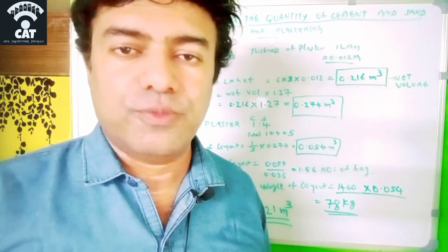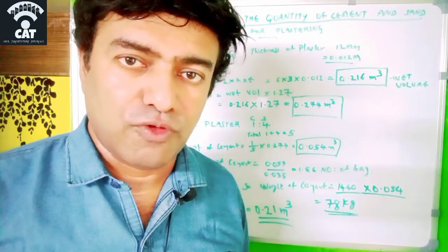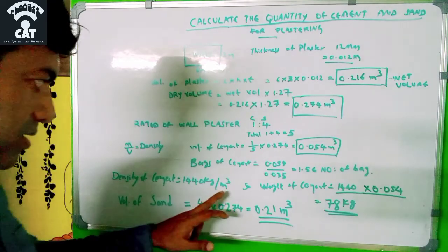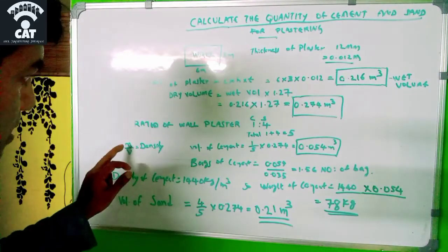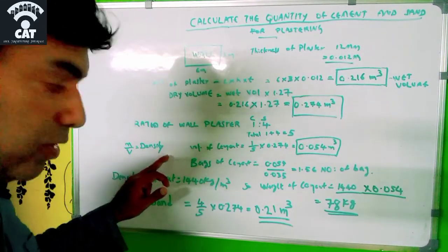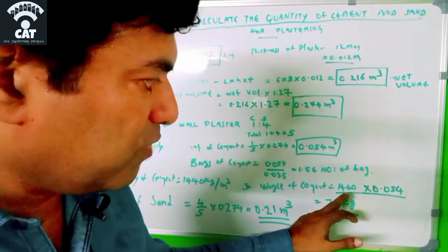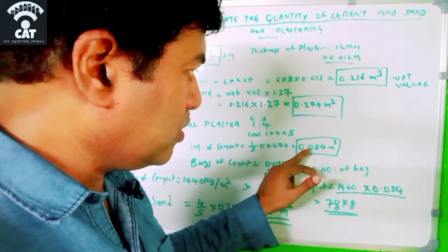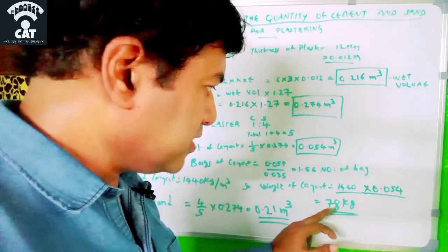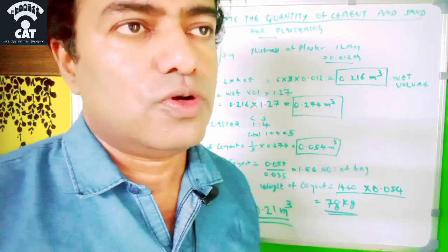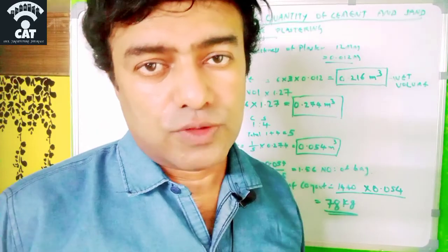To get the mass, density × volume = 1440 × 0.054 = 78 kilos. So we need 78 kilos of cement to plaster this 6 × 3 meter wall.